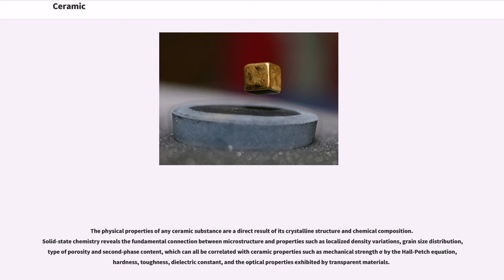The physical properties of any ceramic substance are a direct result of its crystalline structure and chemical composition. Solid state chemistry reveals the fundamental connection between microstructure and properties such as localized density variations, grain size distribution, type of porosity and second phase content, which can all be correlated with ceramic properties such as mechanical strength sigma by the Hall-Petch equation, hardness, toughness, dielectric constant, and the optical properties exhibited by transparent materials.